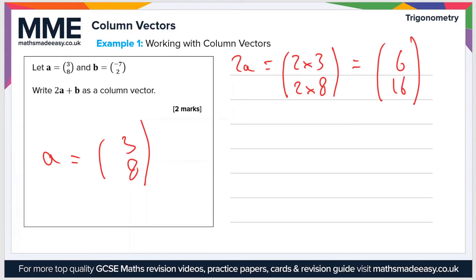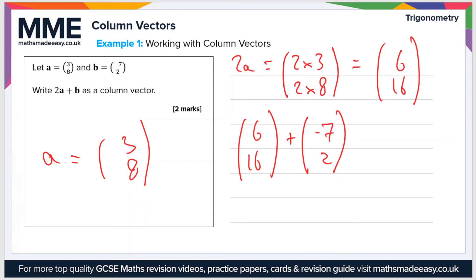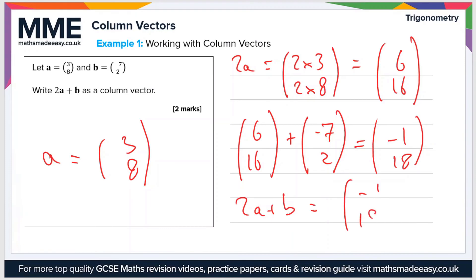So if we want to do 2a plus b, then we have our vector 2a which is (6, 16), plus b which is (-7, 2). So if we add -7 to 6, we get -1. And if we add 2 to 16, we get 18. So the vector 2a plus b equals (-1, 18).